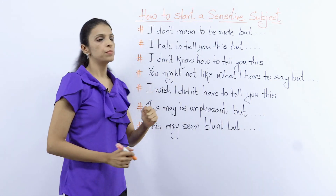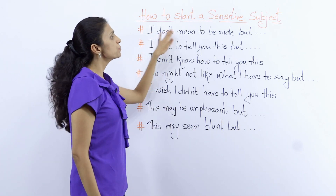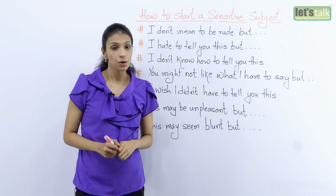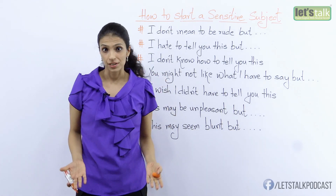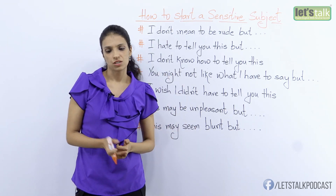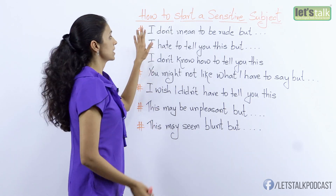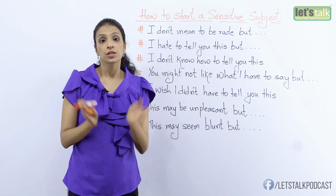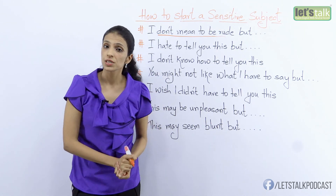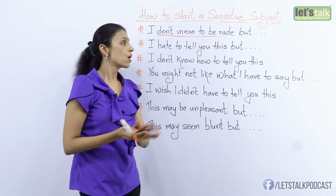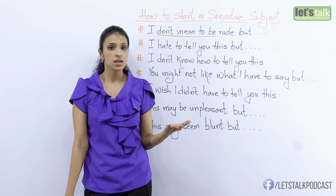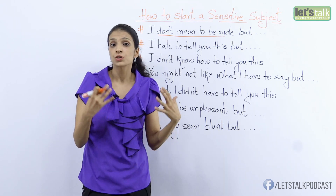Well one of the ways is, you could say: 'I don't mean to be rude, but this dress doesn't really suit you.' Now you are saying the same thing — that the dress doesn't suit you. So instead of just saying it directly, what you could do is say 'I don't mean to be rude.' When you start with that, you are making it very clear to the other person that your intention is not to be rude, to be mean. You don't want to hurt the other person — you mean well.